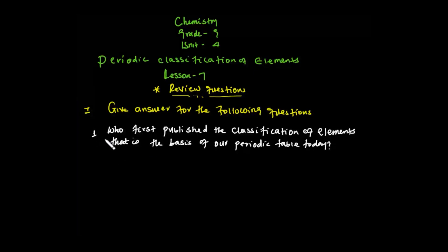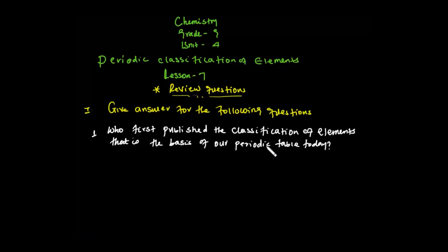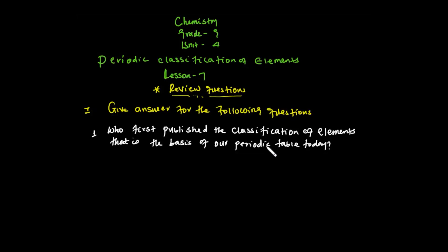Let me ask you a question: Who first published the classification of elements? That is the basis of our periodic table today. For example, Demetri — Mendeleev — gives a method. If you add one, the original periodic formula. Demetri gives a method, we can take an example.